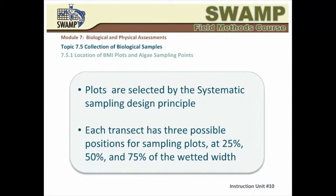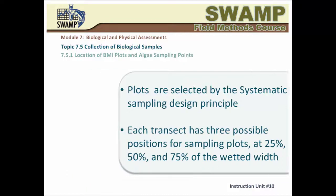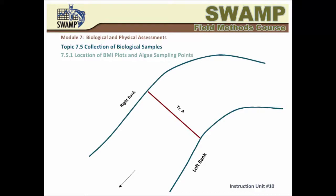After completing the field measurements and collection of water samples, you are ready to collect your biological samples. First, you have to locate your sampling plots. When you are using the Reach Wide Benthos Protocol, BMI and algae sampling plots are selected systematically. At each transect, sampling plots are placed in one of three sampling positions representing 25%, 50%, and 75% of the wetted width. You will begin sampling at transect A, which is the downstream end of the reach, and walk upstream. The protocol calls for collection of the first BMI subsample at the center-right position, at 25% of the wetted width from the right bank.